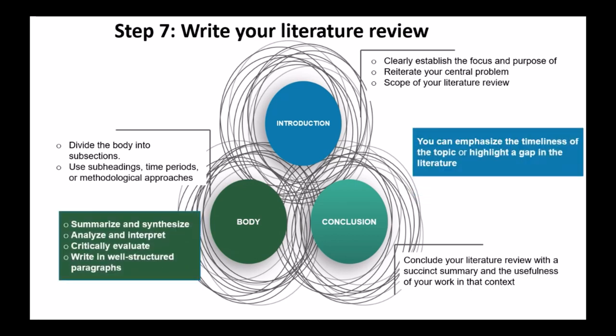In the body of the literature review, you may want to divide it into various subsections and use subheadings for each theme — for example, a time period, methodological approach, or a theory. In this section, it is important to summarize and synthesize what you read — not just regurgitate and paste different studies. You need to analyze and interpret, which helps your voice come through. Critically evaluate articles — find the gaps, see whether methodologies worked for the aims and objectives, and look for any weaknesses or advantages and disadvantages of studies.